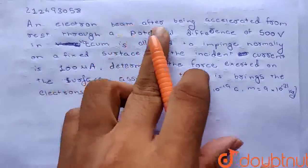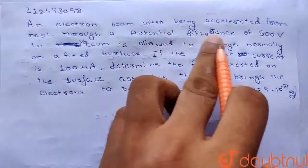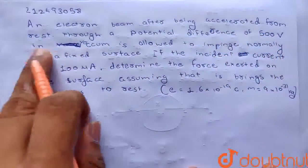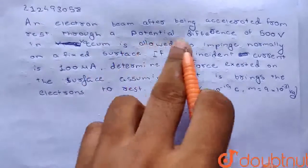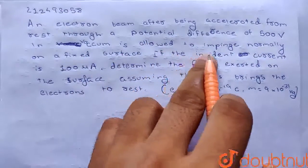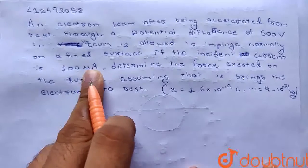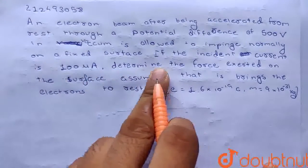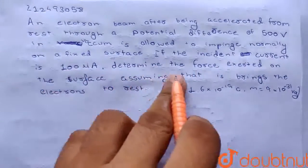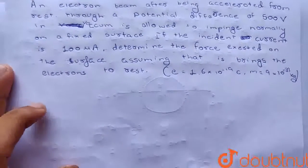An electron beam, after being accelerated from rest through a potential difference of 500 volts in a vacuum, is allowed to impinge normally on a fixed surface. If the incident current is 100 micro ampere, then determine the force exerted on the surface, assuming that it brings electrons to rest.